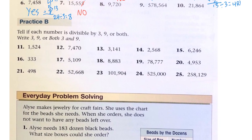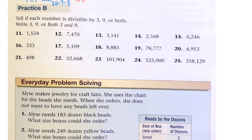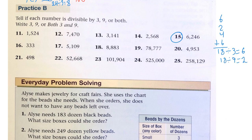Let's look at Practice B. Tell if each number is divisible by 3, 9, or both — write 3, 9, or both. To tell if it's divisible by 3, add the digits up and divide by 3. Let's start with number 15: 6 plus 2 plus 4 plus 6 is 18. 18 divided by 3 equals 6, and 18 divided by 9 equals 2. So yes for 3, and yes for 9 — we can write both.